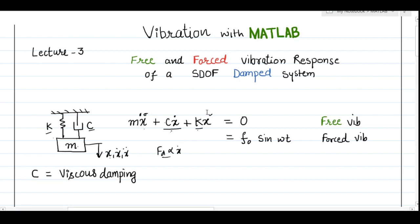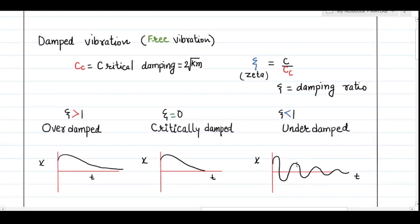Before writing the MATLAB code for damped vibration, let's review the important concepts. In free damped vibration, we define critical damping as 2 times the square root of km, and the damping ratio zeta as the ratio of the system damping to the critical damping. Critical damping is a property of the system defined by k and m, not by the actual external damping.